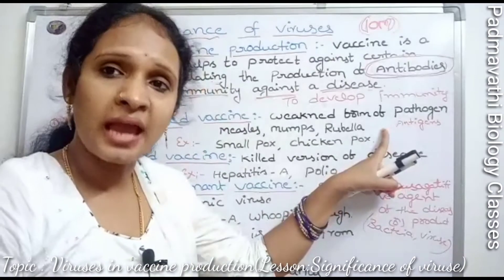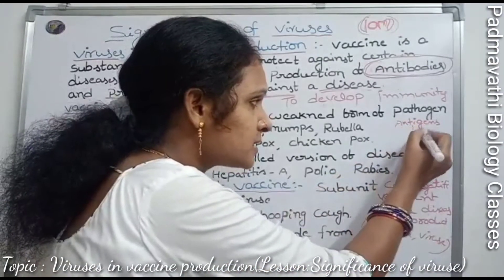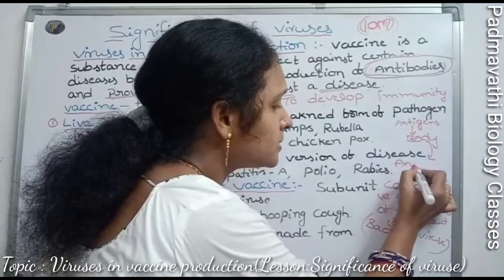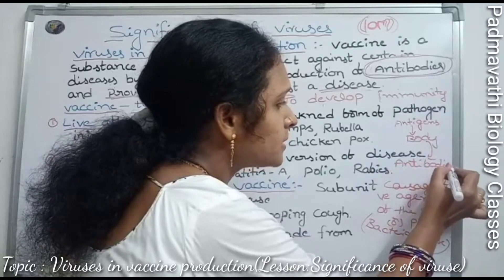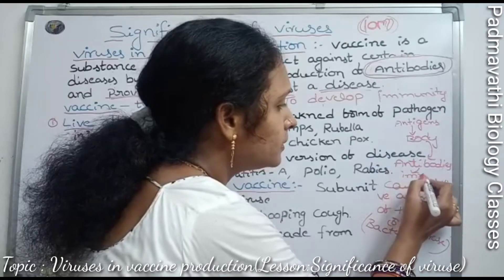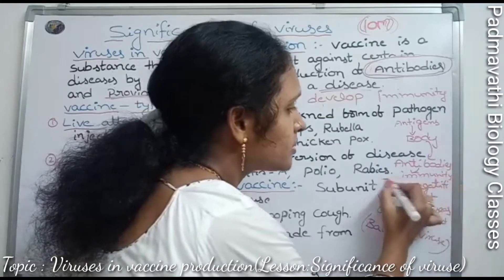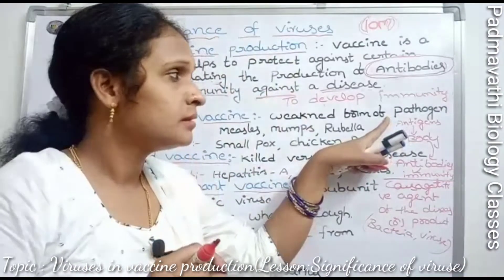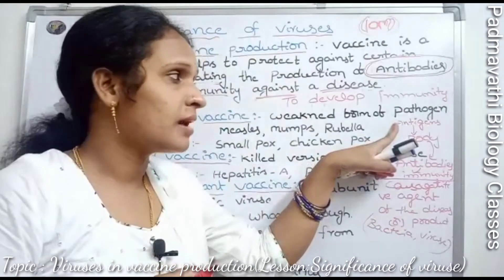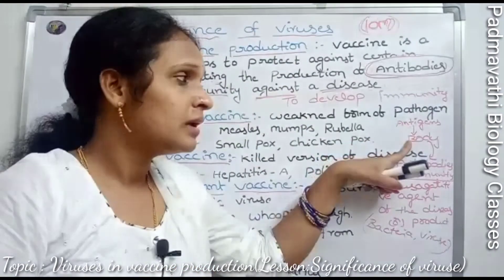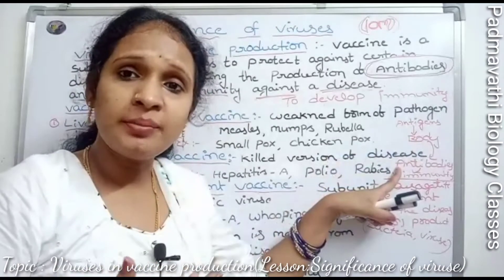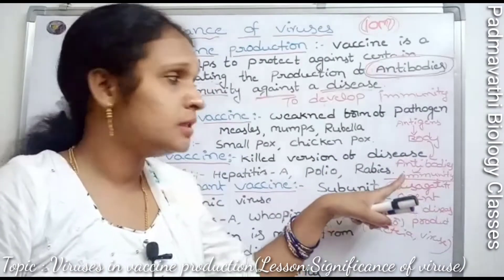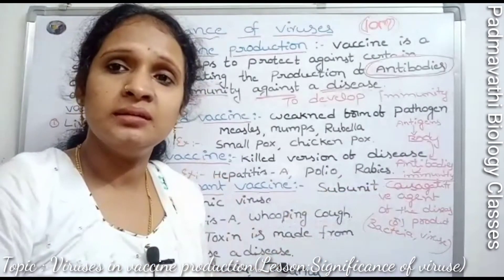Vaccines act as antigens. Once injected into our body, they immediately produce antibodies to develop the immune system against the disease. This immunity system helps to avoid certain diseases.